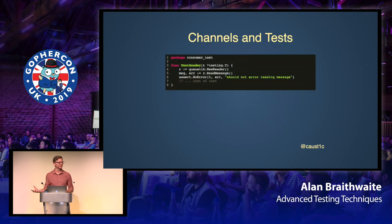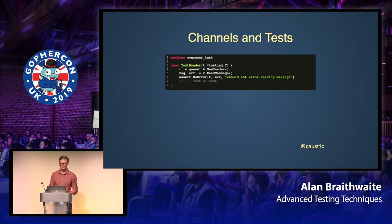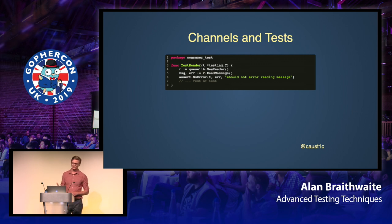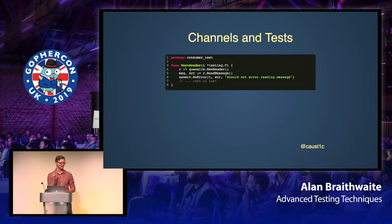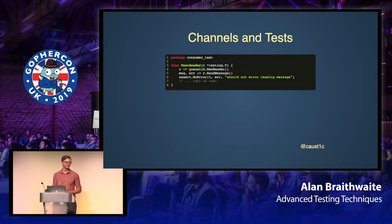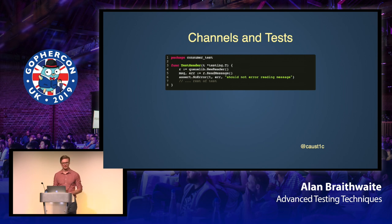Conversely, if you write your API in a synchronous way, I think it communicates the intent much better and you don't have to worry about all of those additional semantics. Here we have the same API written synchronously — readMessage is a blocking function. You could also pass in a context so that it's cancelable. Importantly, just because this method is blocking doesn't mean the implementation can't be asynchronous under the hood. Would you rather test this code or code that exports channels? I almost always fall on this synchronous code.